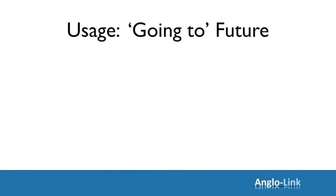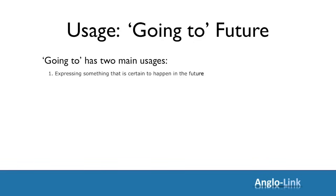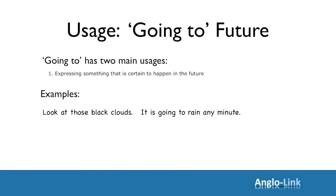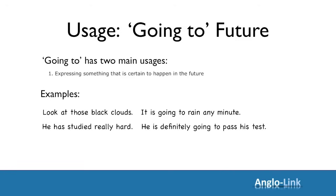Now let's look at the usage of the going to future. Again, there are two main usages. The first one is to indicate some form of certainty for the future — something that's certain to happen. Let's look at some examples: Look at those black clouds — it's going to rain any minute. He has studied really hard — he's definitely going to pass his test. The roads are all blocked — we're going to miss our flight.